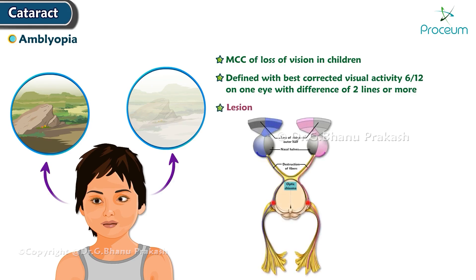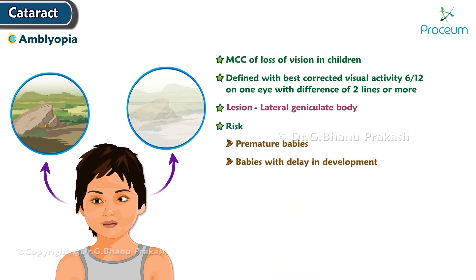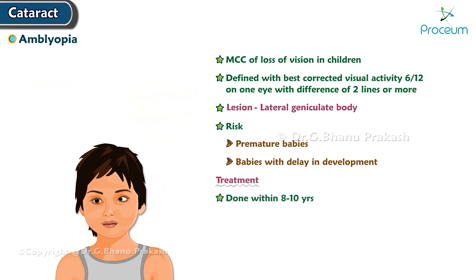The lesion in amblyopia patients is mostly in the lateral geniculate body. Premature babies or babies with developmental delay are at huge risk. Treatment should be done within 8 to 10 years and includes glasses and patch occlusion on the good eye for every 6 hours.